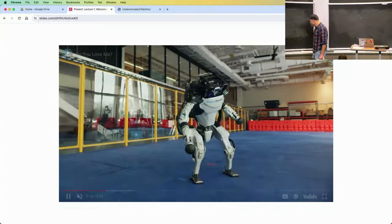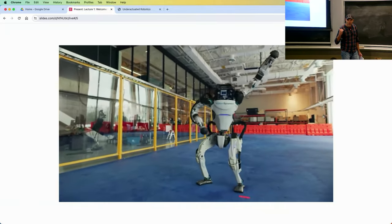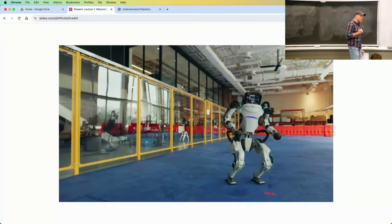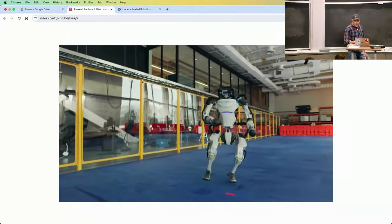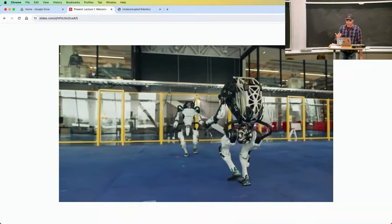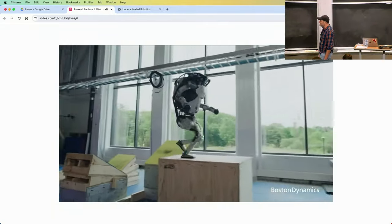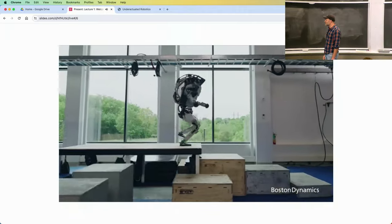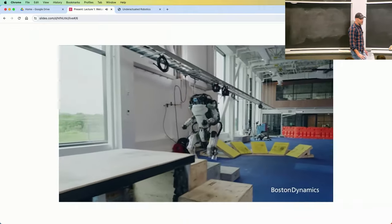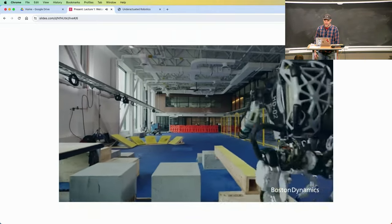So what is this class about? Roughly, this class is about making Atlas dance — but it's a little more than that. That's the theme: we're going to try to understand the math behind making robots do things like this, because it's a very general recipe. It's awesome for me to have been working on this over the years and watch these things come to life. This is Atlas doing parkour — the capabilities of this hardware and software are absolutely phenomenal.